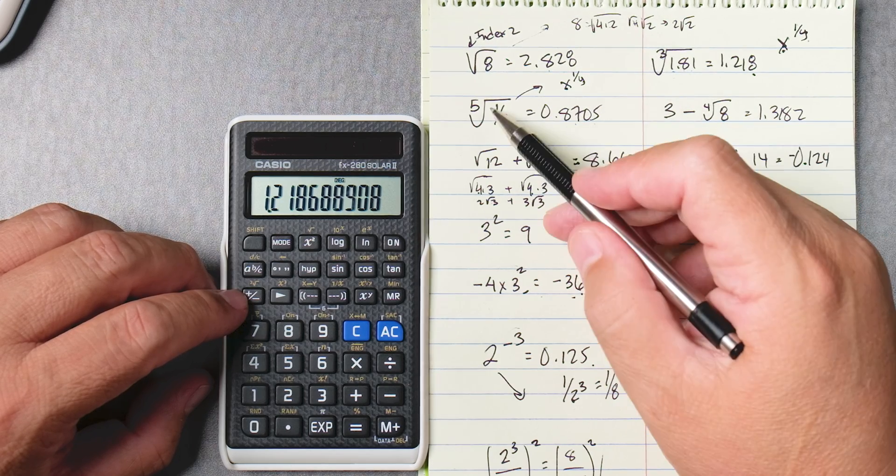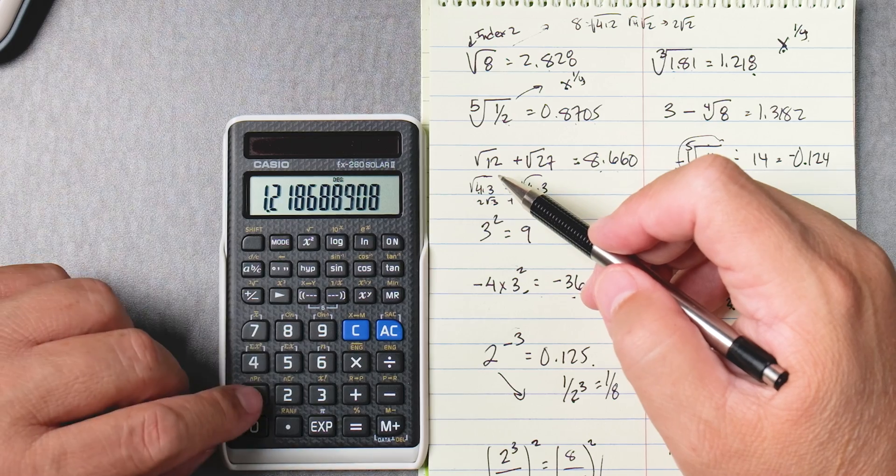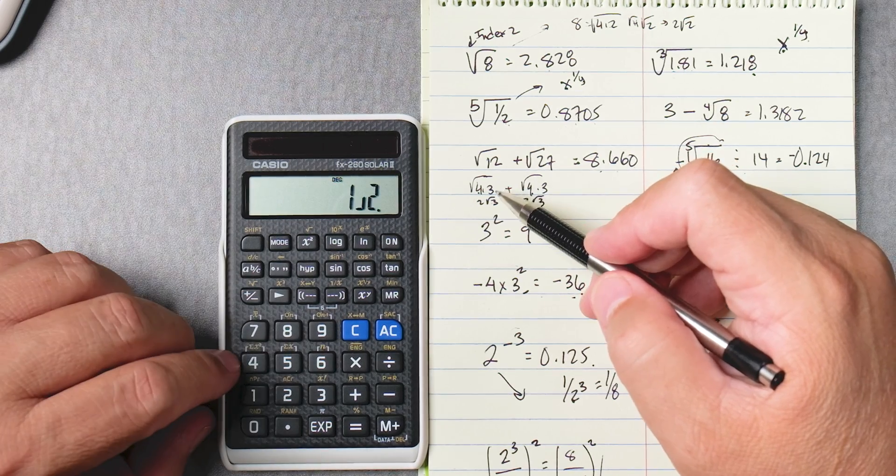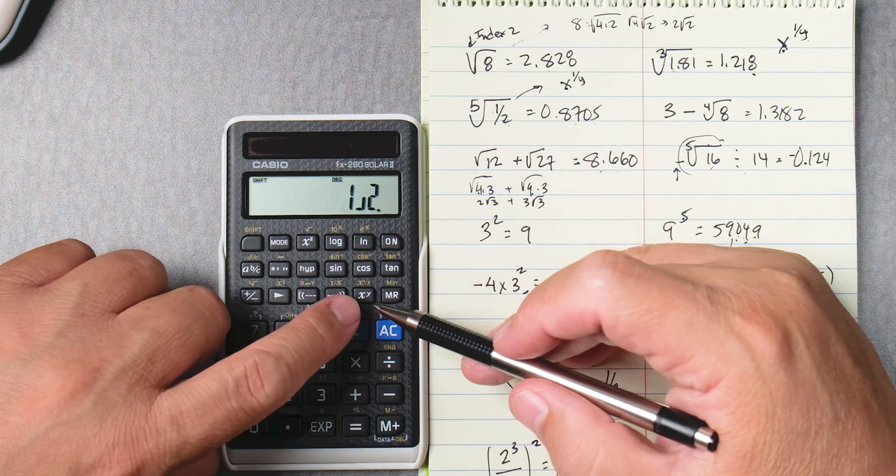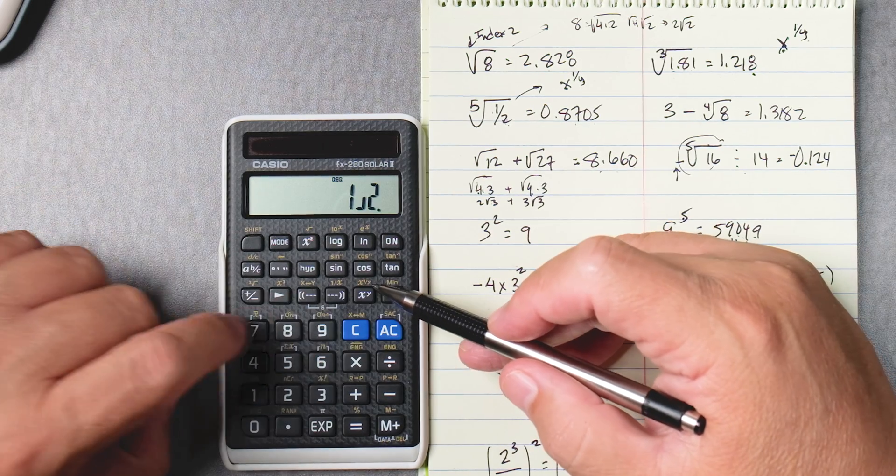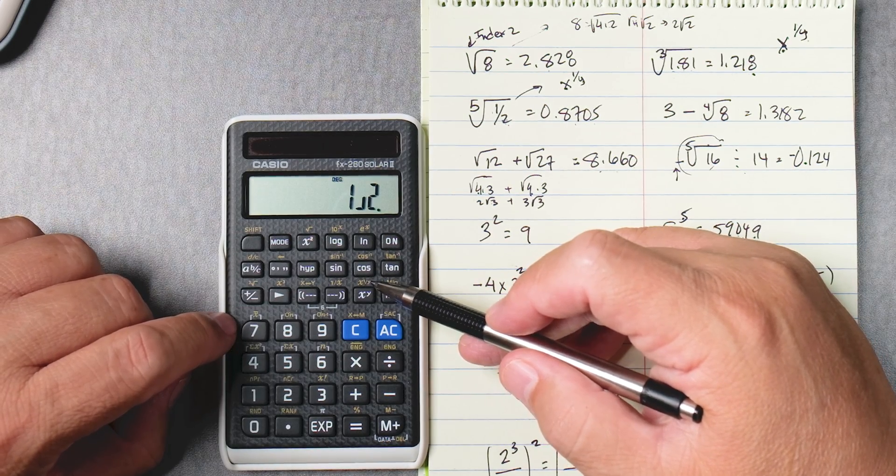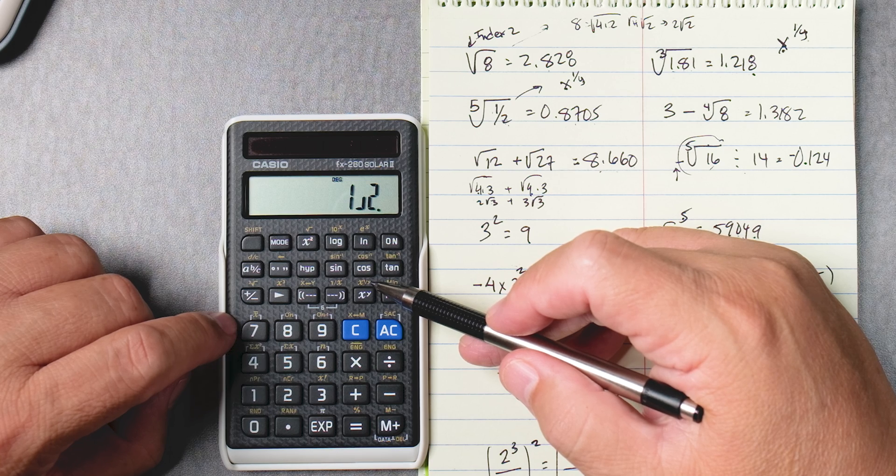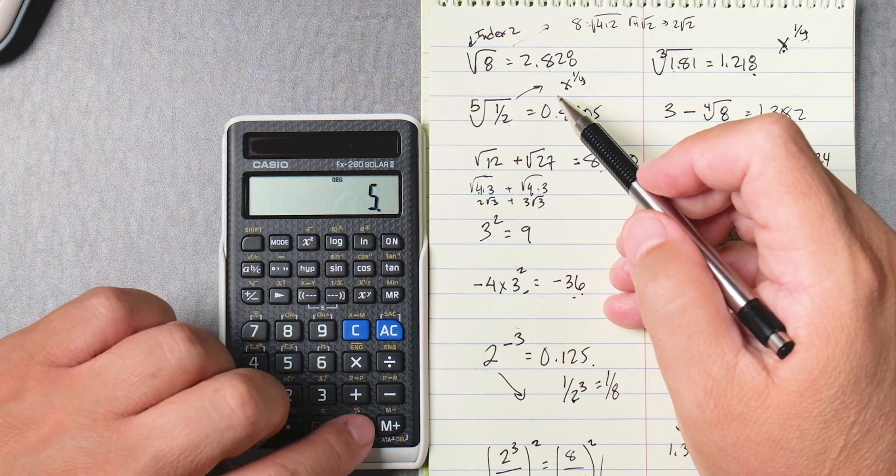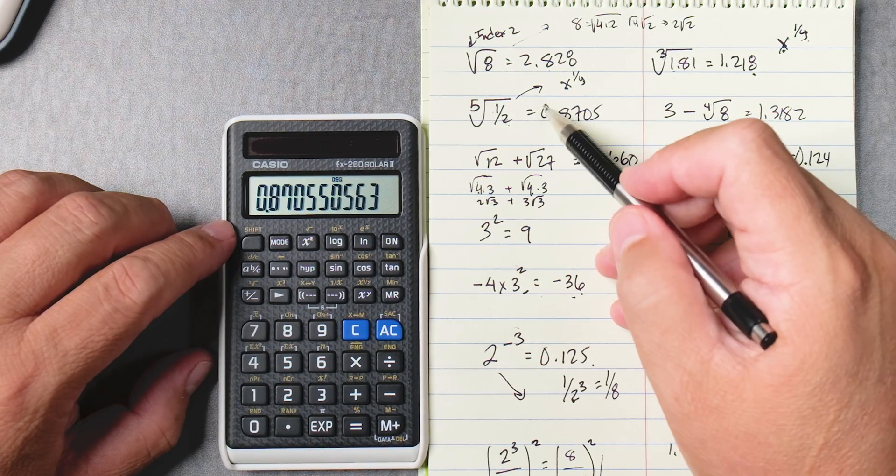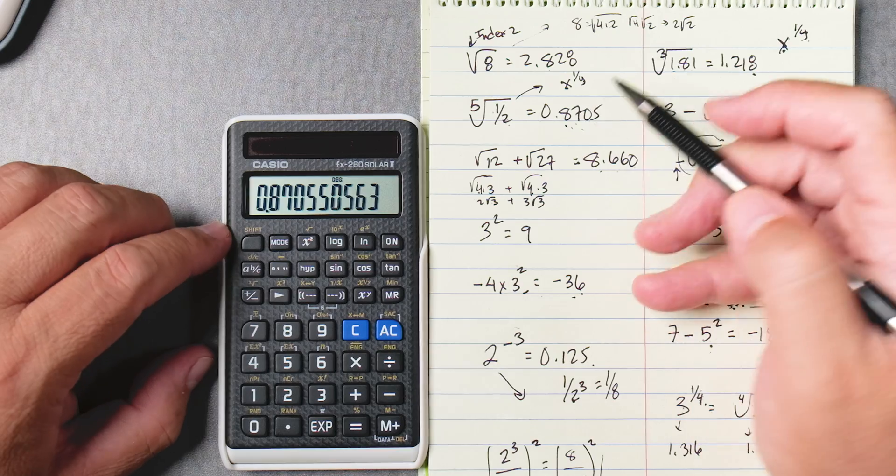So we're going to do the half first: 1 abc 2, that gives you half. Then we press shift x to the y key because that's the x to the 1 to the y. Okay, power, and what are we going to type here? We're just going to type in the 5 equals and that gives you 0.8705.